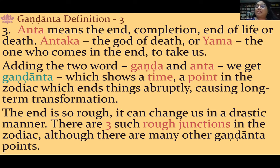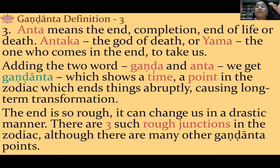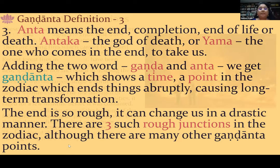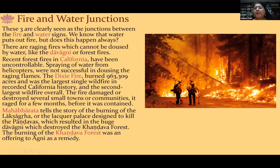There are three major rough junctions in the zodiac — the three Gandanta points. Now, the first thing we must remember about these rough points is that they are all fire and water junctions. What happens when fire and water come together? Many times, water is unable to douse fire. For example, raging forest fires — in Sanskrit called davagni — like the Dixie fire in California. During the Dixie fire, they sprayed water from helicopters but it did not help. It burned almost 964,000 hectares and was the largest single wildfire recorded in Californian history.